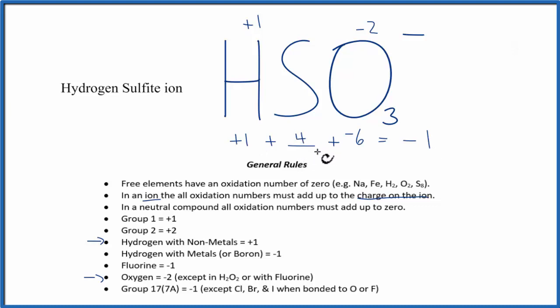That would give us a positive five. Positive five minus six, that gives us a negative one. So this four, this positive four, that's the oxidation number on the sulfur.